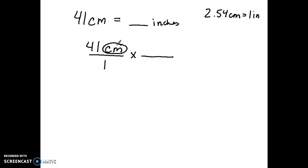In math, the only way you can cancel out units is if you have one unit in the numerator and one in the denominator across the equation. So to make centimeters cancel out, I force centimeters into the denominator of the next fraction. If I know a conversion factor that has centimeters and gets me closer to inches, I use it. So: centimeters in the denominator, inches in the numerator. Notice how I set up the units before looking at the numbers — that's the first thing.